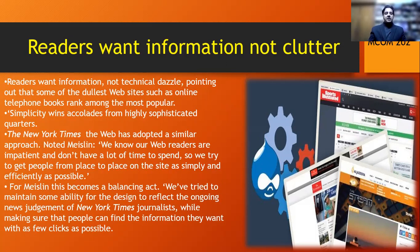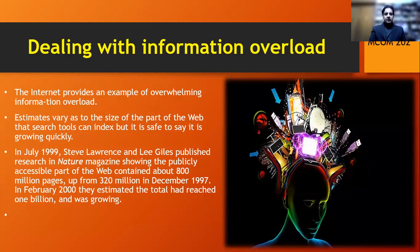It is a balancing act — they have tried to maintain some ability for the design to reflect the ongoing news judgment of New York Times journalists, while making sure that people can find the information they want with a few clicks. The internet is an example of overwhelming information overload. In July 1999, Steve Lawrence and Lee Giles published research in Nature magazine showing the publicly accessible part of the web contained about 800 million pages, up from 320 million in December 1997. By February 2000, they estimated the total had reached 1 billion and was growing.